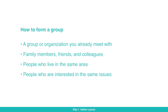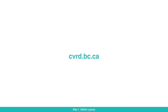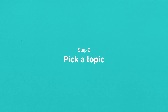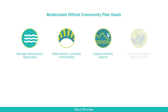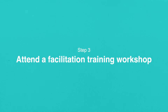If you don't have a group but still want to participate, please email communitycircles@cvrd.bc.ca or visit our website to find sessions being hosted by staff and how you can sign up for them. Step 2: Pick a topic. The Modernized Official Community Plan is organized around 8 goals. Before you meet as a group, choose a goal or several goals that you'd like to discuss, or feel free to create your own goal if you don't see it reflected here.